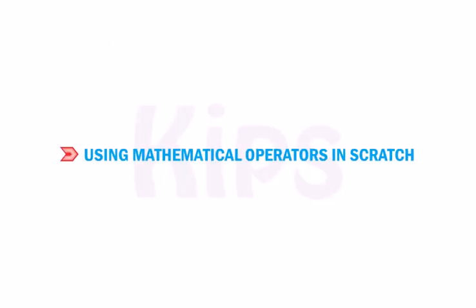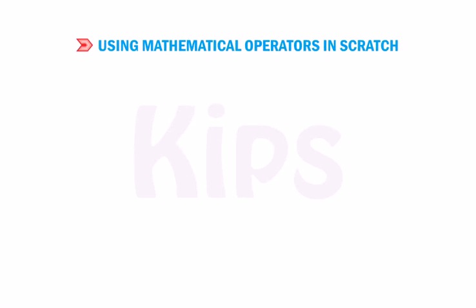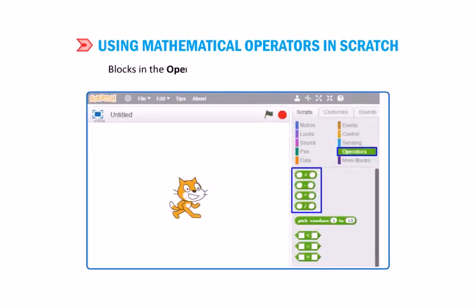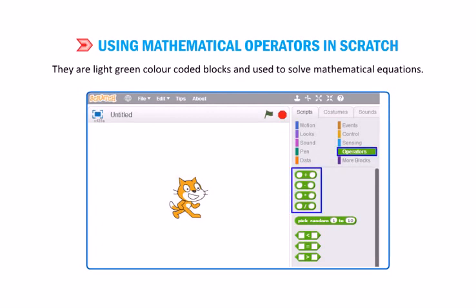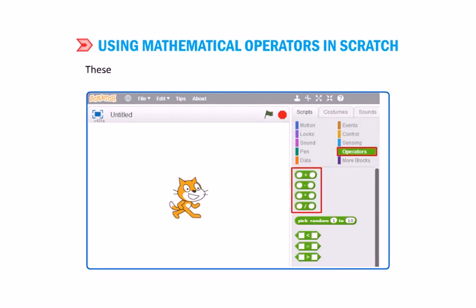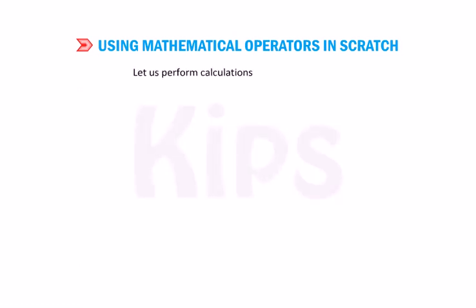Let us learn about mathematical operators in Scratch. Blocks in the operator's block category are round in shape. They are light green color coded blocks and used to solve mathematical equations. These blocks can easily be placed in the value box of any other block. Let us perform calculations in a Scratch project.